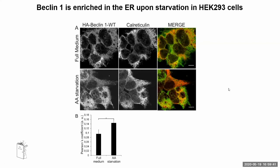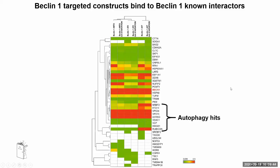We then collaborated with the proteomics unit of our university and performed mass spectrometry to look for known interactors of Beclin-1 in all of our constructs. Focusing on our autophagy hits across full media and starvation conditions, in all constructs and all conditions we were able to find our known interactors — for example, the two kinases VPS15 and VPS34, ATG14, and others. The abundance of the complex was similar across all conditions.